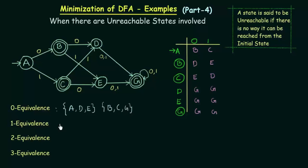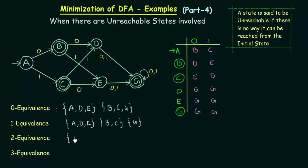For one equivalence — I am not going to solve it step by step as I have already explained in the previous lecture — if you solve it you will find that states A, D, and E are one equivalent to each other. States B and C are one equivalent to each other, and G is not one equivalent to any of the states. For two equivalence, state A is not two equivalent to any of the states, D and E are two equivalent to each other, B and C are two equivalent to each other, and G is by itself.